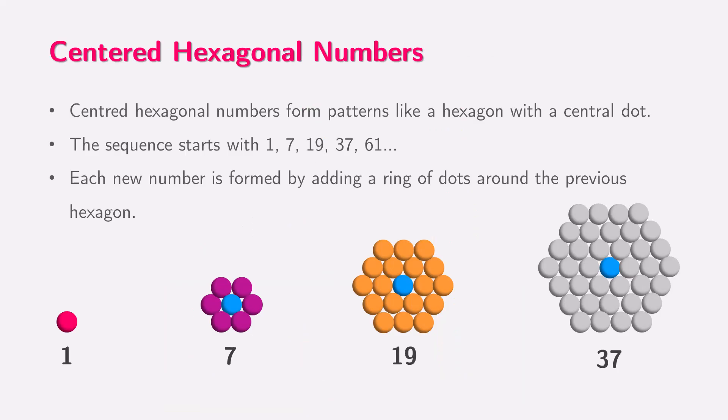Let's explore centered hexagonal numbers. These numbers are a special type of hexagonal numbers with a dot right in the center. Imagine starting with one dot in the middle, then 6 dots are added around it, making 7 dots total. To find the next centered hexagonal number, we add another ring of dots around the hexagon, giving us 19 dots.